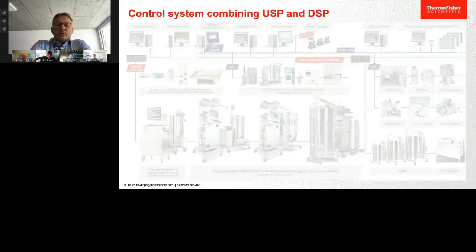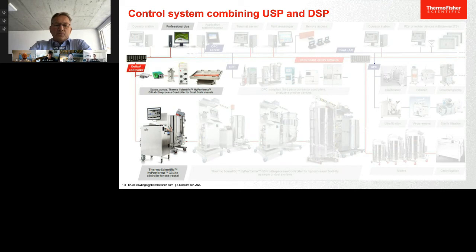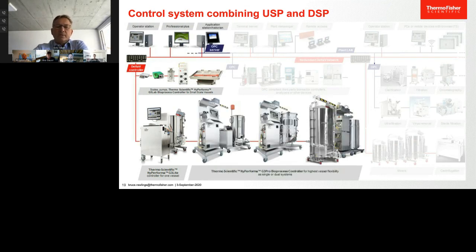While talking about continuous processing, we also need to discuss management of the process flow between unit operations. For a simple perfusion process using an ATF, an isolated unit operation might be absolutely fine — in that case, for larger scales, our all-in-one G3 Light controller will be a good choice. For small-scale glass or single-use vessels, the G3 Lab universal controllers are designed to be highly flexible. These require the setup of an Emerson Delta V network, provided in minimum configuration by a professional plus computer and the Delta V controller.